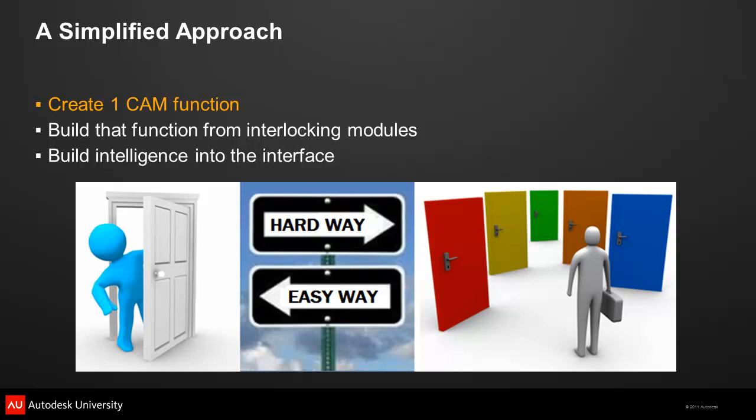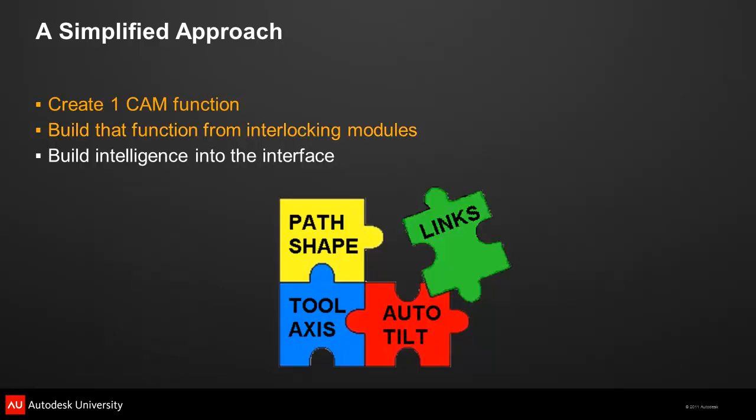The key to creating an elegant solution is to throw away the idea that each type of 5-axis work needs a specialized function — that approach is confusing and unnecessary. A simpler approach is to create a single function that meets the needs of the majority of 5-axis work. The composite function is composed of a set of interlocking modular building blocks, each designed to perform well separately and together. This modular design allows for easy testing and expansion, and results in faster implementation and more reliable software.